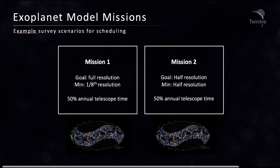Twinkle's native resolving power varies from 20 to 70 across the simultaneous 0.5 to 4.5 micron wavelength coverage. However, interesting science can also be achieved with lower resolutions. In the first mission scenario, while the goal for each planet was to achieve the full resolution of the instrument, any data where a resolution of greater than one eighth of this was considered useful. In the second scenario, both the goal resolving power and the minimum were set to half the native.